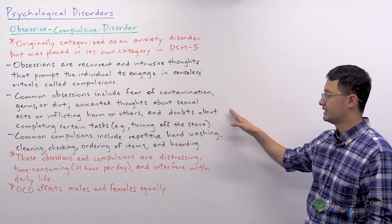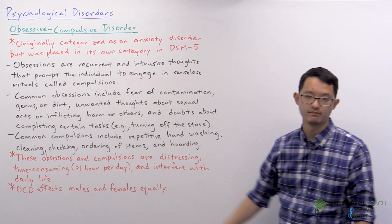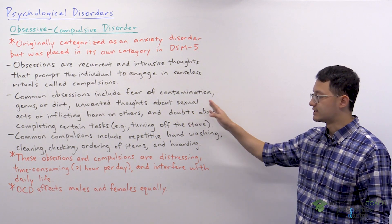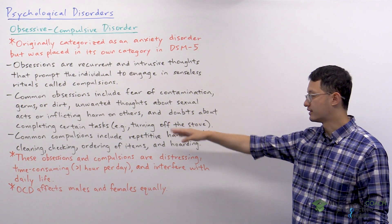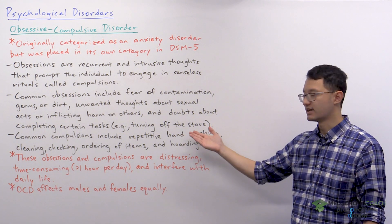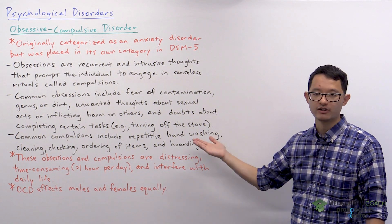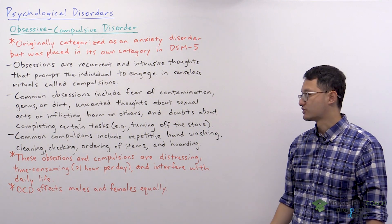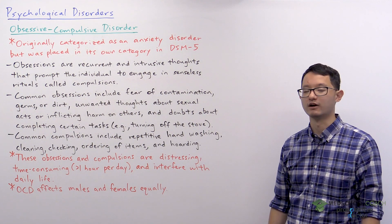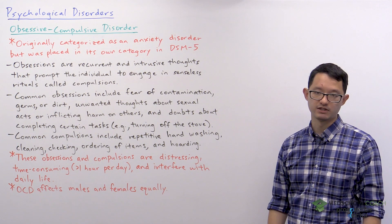Common obsessions for OCD include fear of contamination, germs, or dirt, like in the example we just went over. Other obsessions include unwanted thoughts about sexual acts or inflicting harm on others, and doubts about completing certain tasks. A very good example is individuals who have the obsession that they forgot to turn off the stove, so their compulsion — this senseless ritual they keep performing — is checking the stove to make sure it's been turned off.